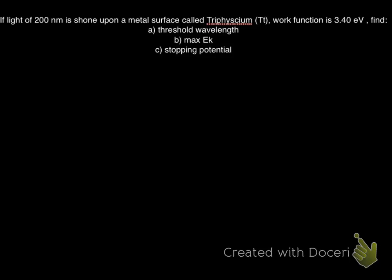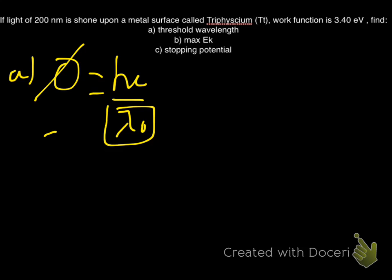Here is another question. Pause for a while and have this a try for yourself. Welcome back. So I know that my work function is equal to hc over lambda-nought. I need to find the threshold wavelength, which is lambda-nought. Lambda-nought equals to hc over the work function.